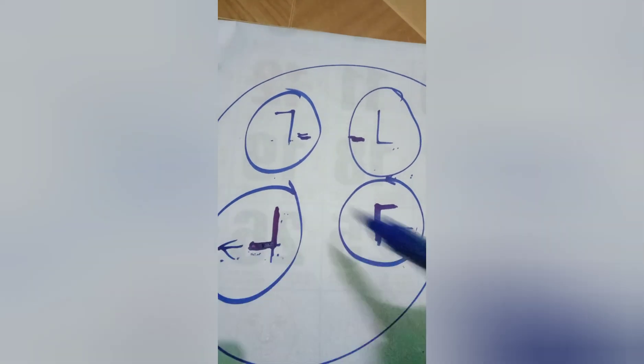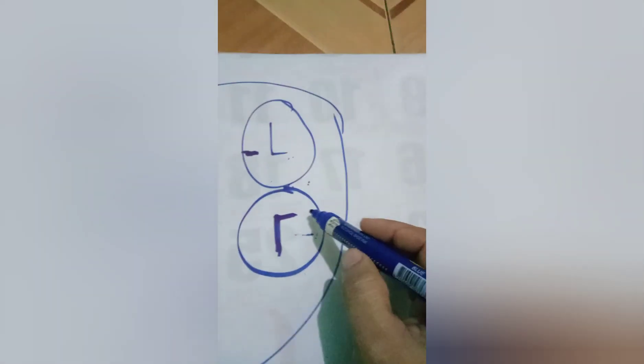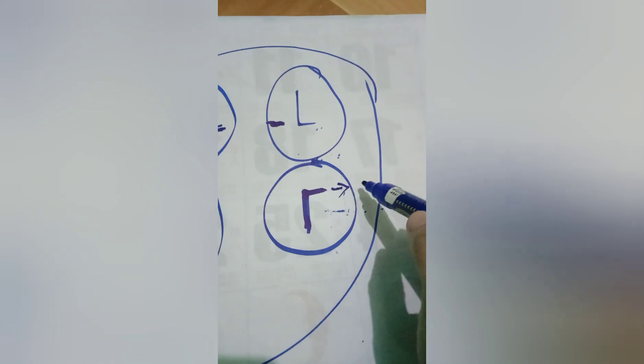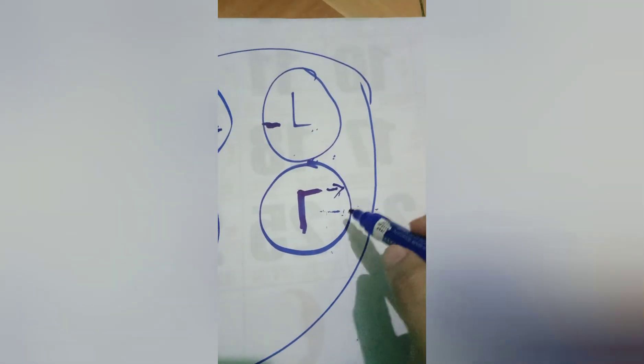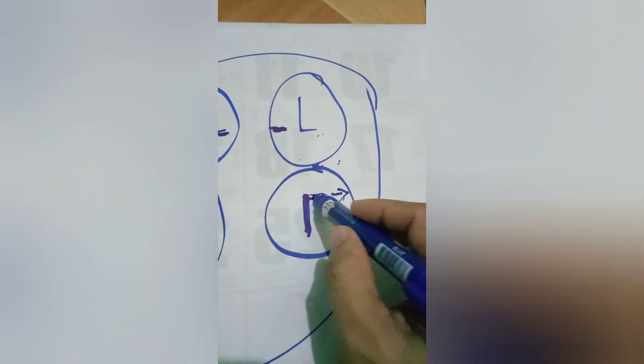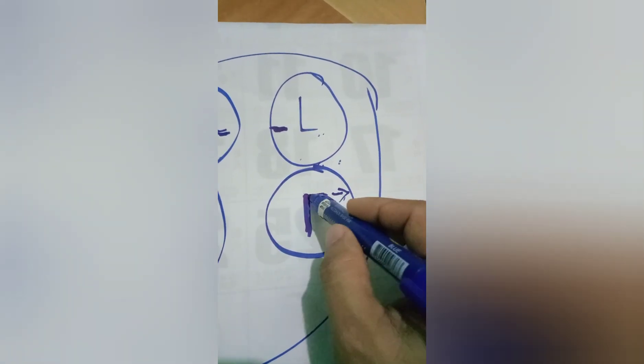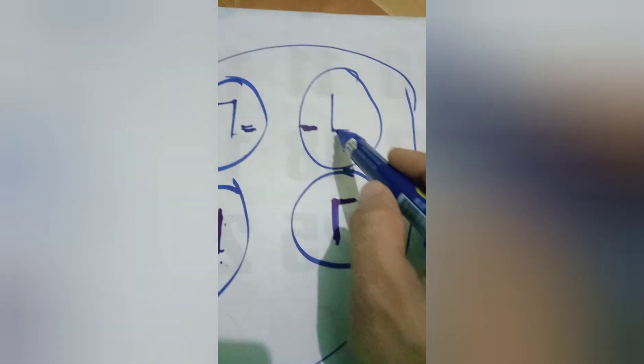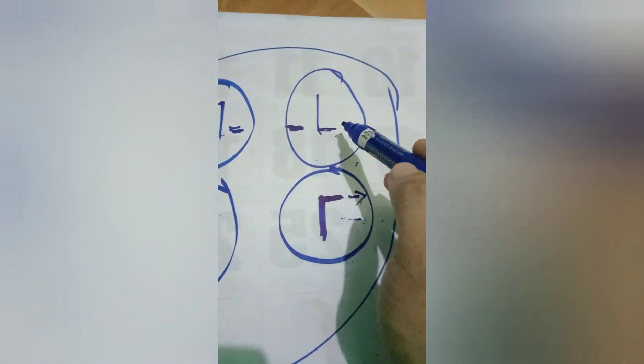Kapag papunta siya sa kaliwa, yan po ay 7. Ang L naman, kapag papunta siya sa right side, yan po ay L. Ito po yung pinaka-importante dito, yung short arm.